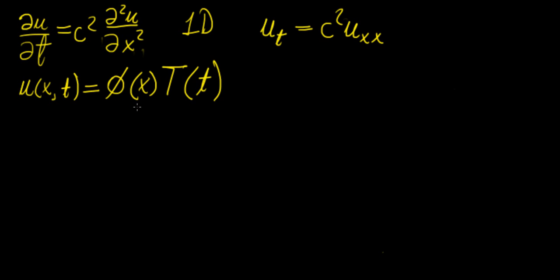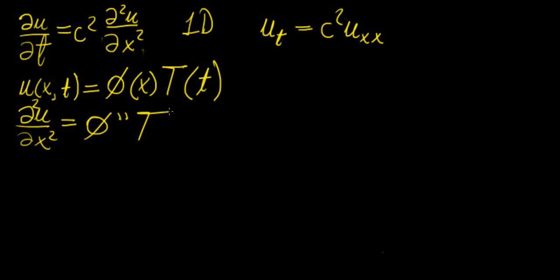Those ODEs should be fairly easy to solve because they won't be coupled — each one is a differential equation with respect to a different variable, so they're solvable individually. The first thing we do is take the partial derivative of u with respect to x, twice. When we differentiate with respect to x, T stays constant but ψ is differentiated, giving us ψ'' · T. For the time derivative, ψ remains constant and T is differentiated with respect to time, giving us ψ · T'.